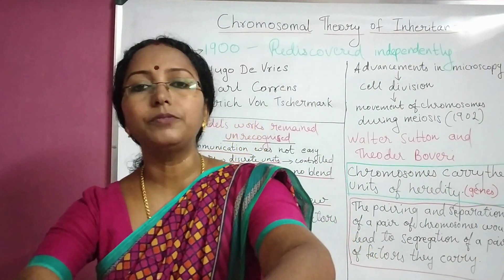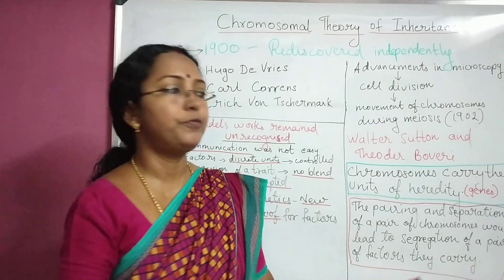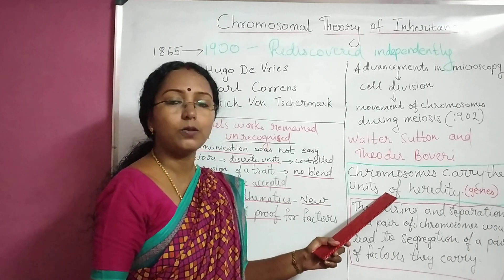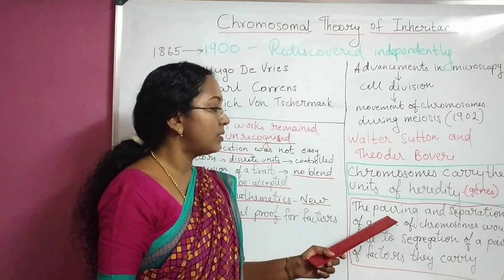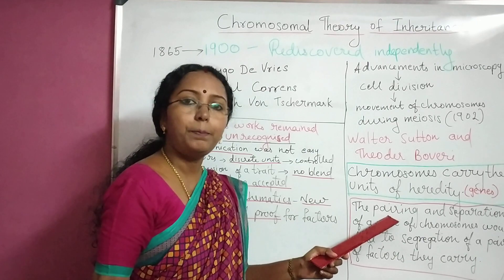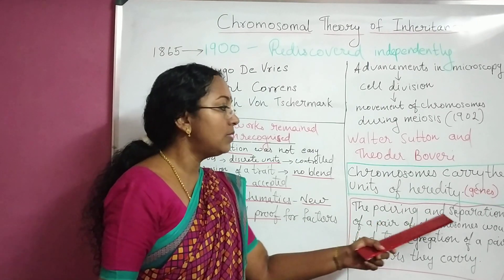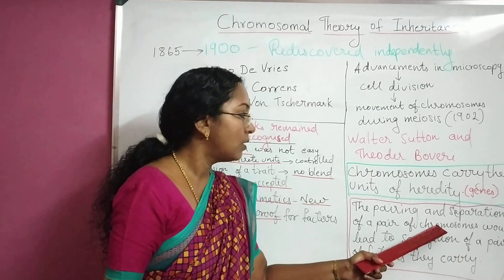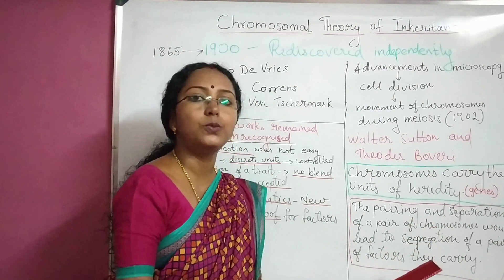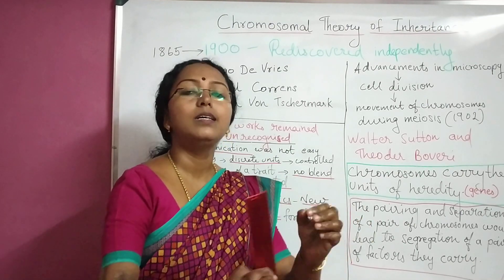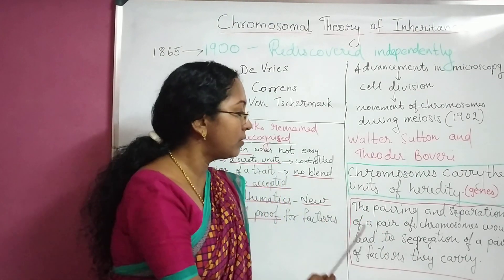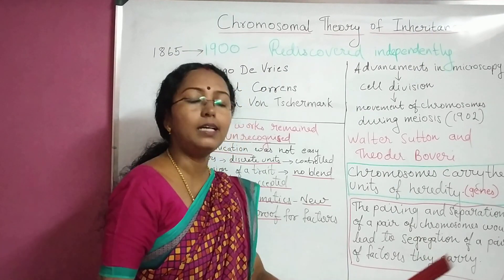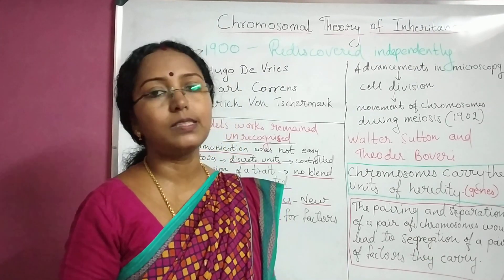In simple terms, if asked what is the chromosomal theory of inheritance, the statement is: chromosomes carry the units of heredity, or genes. And also, the pairing and separation of a pair of chromosomes would lead to segregation of the pair of factors they carry.